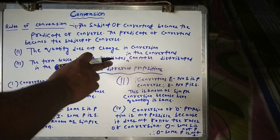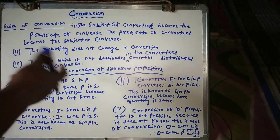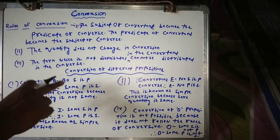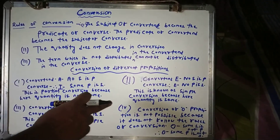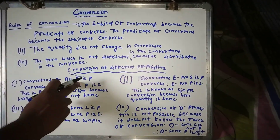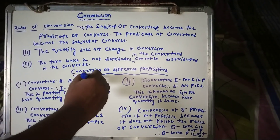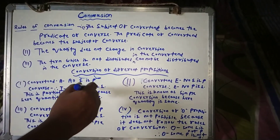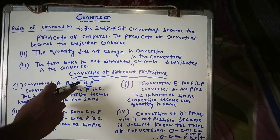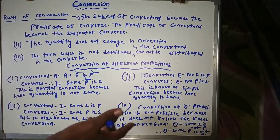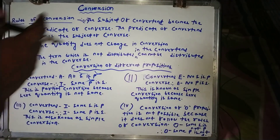The third rule: a term which is not distributed in the convertent cannot be distributed in the converse. If a term is not distributed in the convertent and you distribute it in the converse, that violates this rule. You are not allowed to distribute a term in the converse that was not distributed in the convertent.